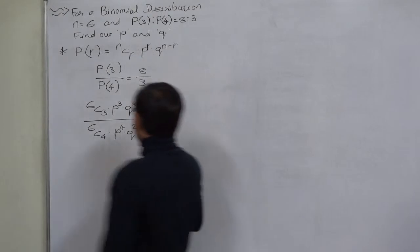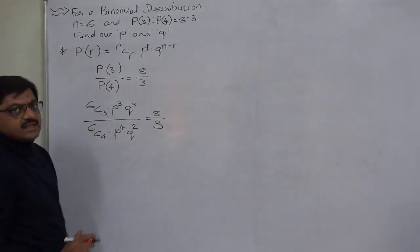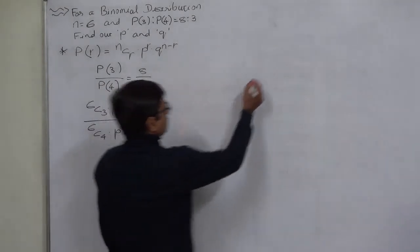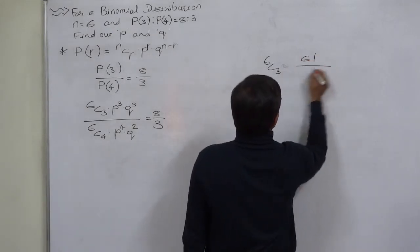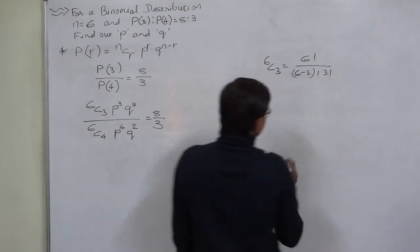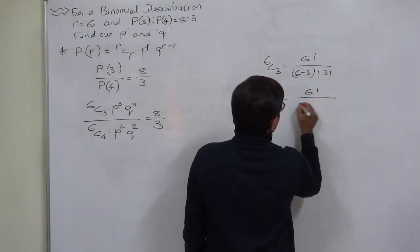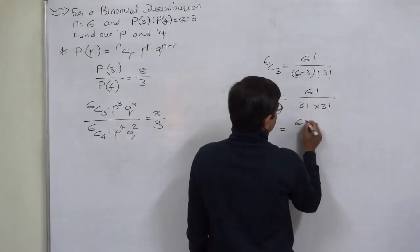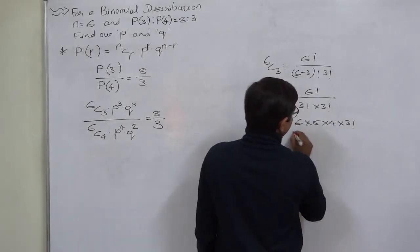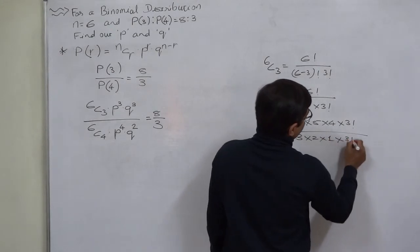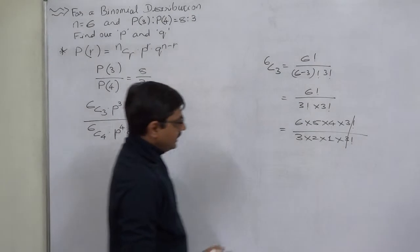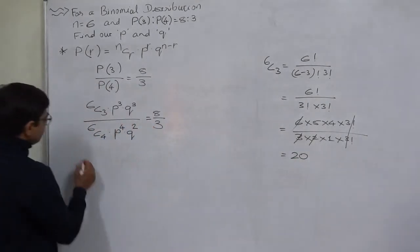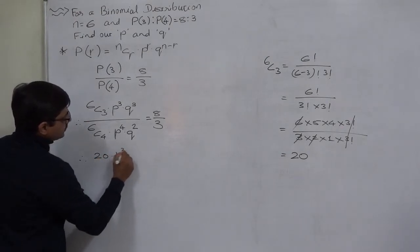Now simplifying: 6C3 equals 6 factorial divided by (6 minus 3) factorial into 3 factorial, which is 6 factorial divided by 3 factorial into 3 factorial. Expanding: 6 into 5 into 4 into 3 factorial divided by 3 into 2 into 1 into 3 factorial. After cancellation, 6C3 equals 20. So the numerator becomes 20 into P raised to 3 into Q raised to 3.